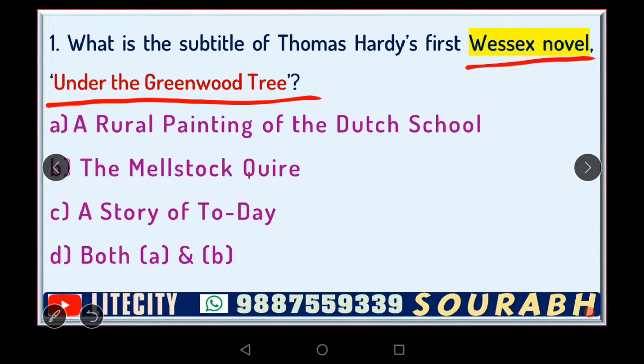Hardy had already written two novels before this, but this was the novel he set in this particular imaginary region called Wessex. The options are: A) 'A Rural Painting of the Dutch School,' B) 'The Malstock Choir,' C) 'A Story of Today,' or D) both A and B. You have to tell what the subtitle was.